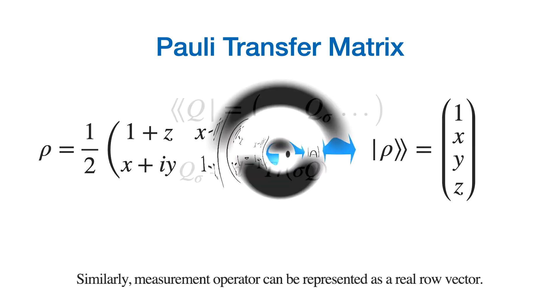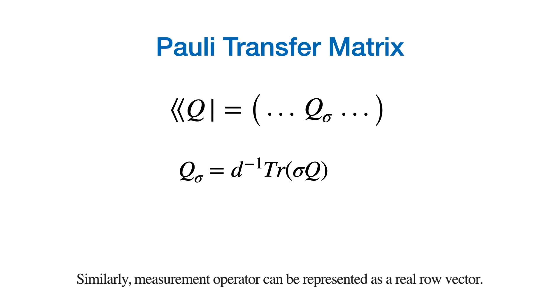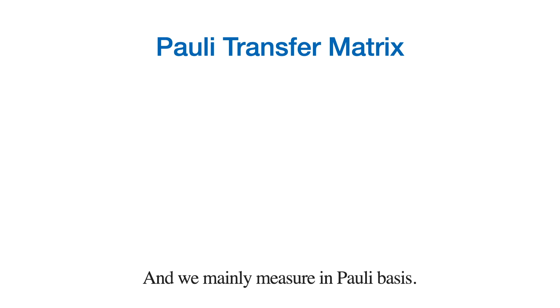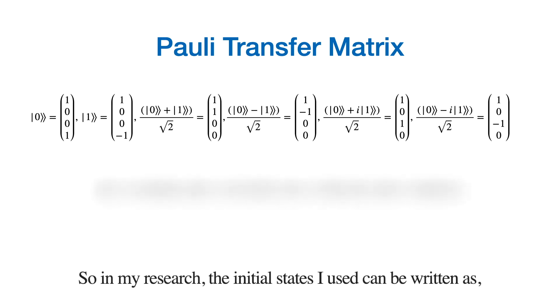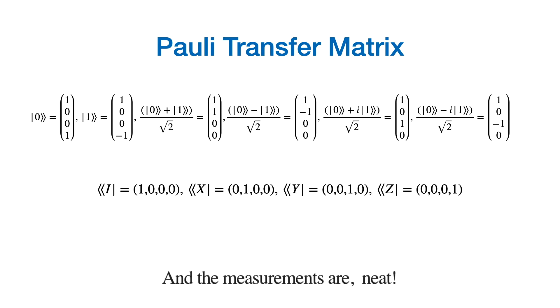Similarly, measurement operators can be written as the real row vector, and the remaining measure in Pauli basis. So, in my research, the initial states I used can be written as the measurements. You may ask why I use this formalism.